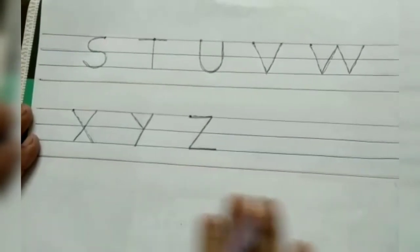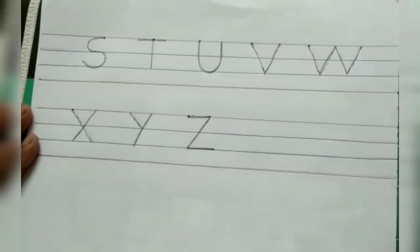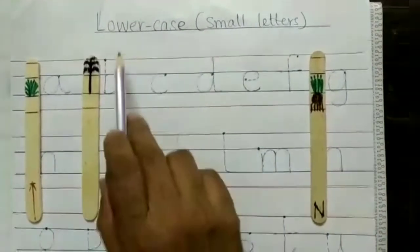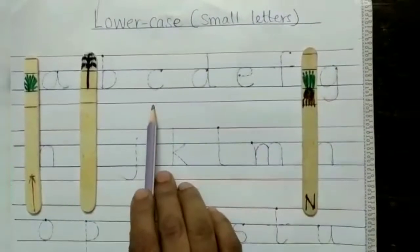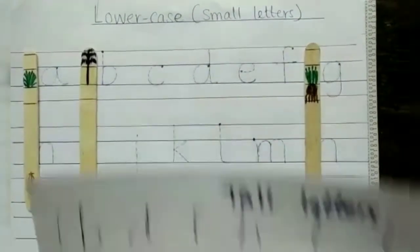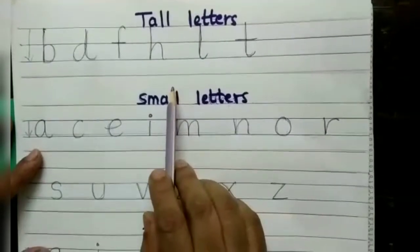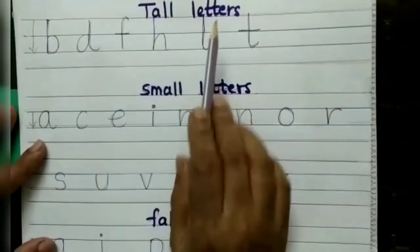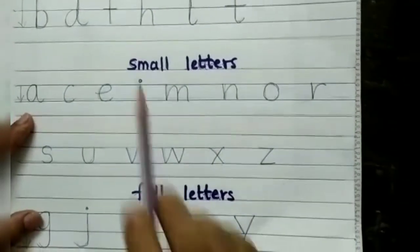So this is the formation of capital letters. Now we will learn how to write the lowercase, or the small letters. But before we begin, the small letters are divided into tall letters, small letters, and fall letters.